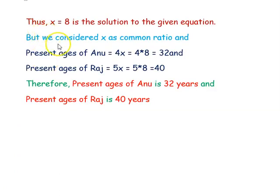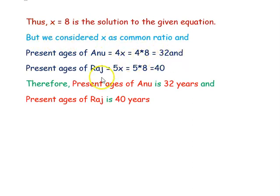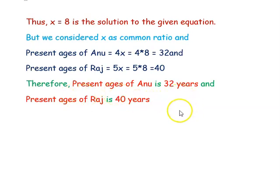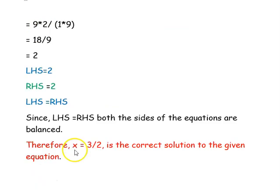Since x was considered as the common ratio, the present age of Anu is 4 × 8 = 32 and the present age of Raj is 5 × 8 = 40. Therefore, the present age of Anu is 32 years and that of Raj is 40 years.